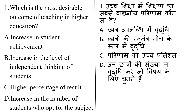This question asks which is the most desirable outcome of teaching in higher education. Options are: increasing student achievement, increasing level of independent thinking of students, higher percentage of results, and increasing number of students who obtained marks for the subject. The most desirable outcome of teaching in higher education is increasing the level of independent thinking of the student.